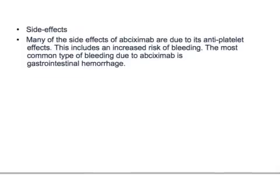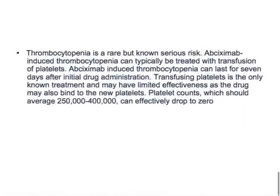Many of the side effects of abciximab are due to its anti-platelet effects. This includes an increased risk of bleeding — the most common type of bleeding due to abciximab is gastrointestinal hemorrhage. Bleeding can occur at any site, but the most important one to remember is GI hemorrhage.